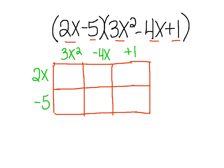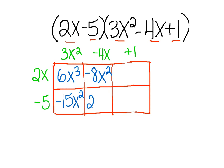Let's fill it out. 2x times 3x squared: 2 times 3 is 6, x times x squared is x cubed — so 6x cubed. Negative 5 times 3x squared is negative 15x squared. 2x times negative 4x: 2 times negative 4 is negative 8, x times x is x squared — so negative 8x squared. Negative 5 times negative 4x is positive 20x. Finally, 2x times positive 1 is 2x, and negative 5 times positive 1 is negative 5.